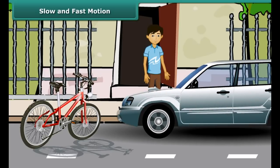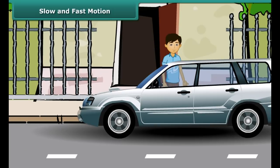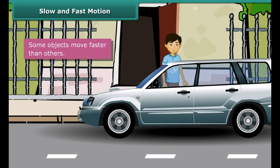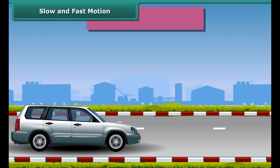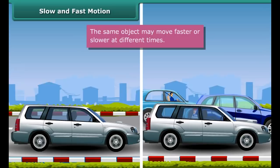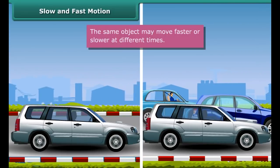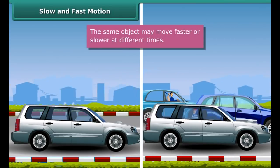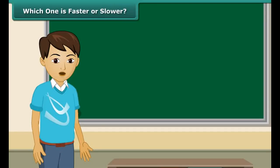Suppose you have an appointment with your doctor at 5 in the evening. It is already 4:30 pm and the doctor's clinic is 5 km away from your house. You have the choice of either cycling down or taking a taxi to the clinic. You will take a taxi because a taxi is faster than a cycle. So, we can say that some objects move faster than others. The same taxi moves fast on an empty road and slow on a busy road. Thus, the same object can move fast at one time and slow at another time.